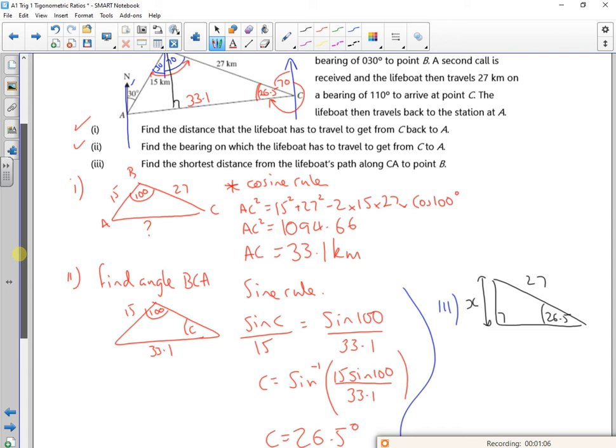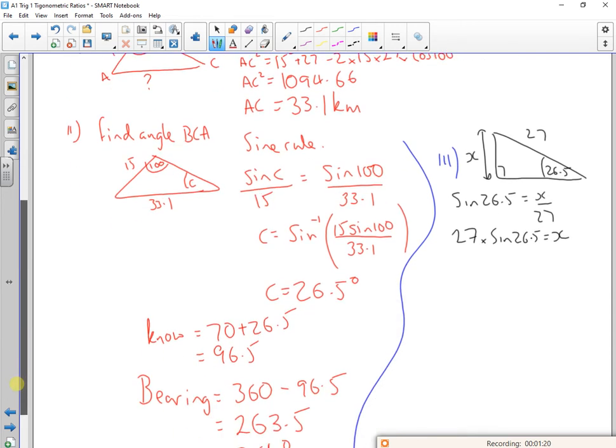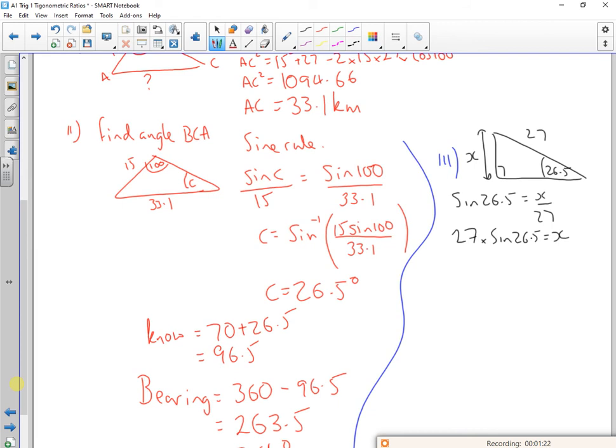So that's the opposite over the hypotenuse, that's sine. So sine of 26.5 is X over 27, so 27 times sine of 26.5 must be X. And that gives us, I'll move that down so you can see it, about 12.1 kilometers. So that's the shortest distance.